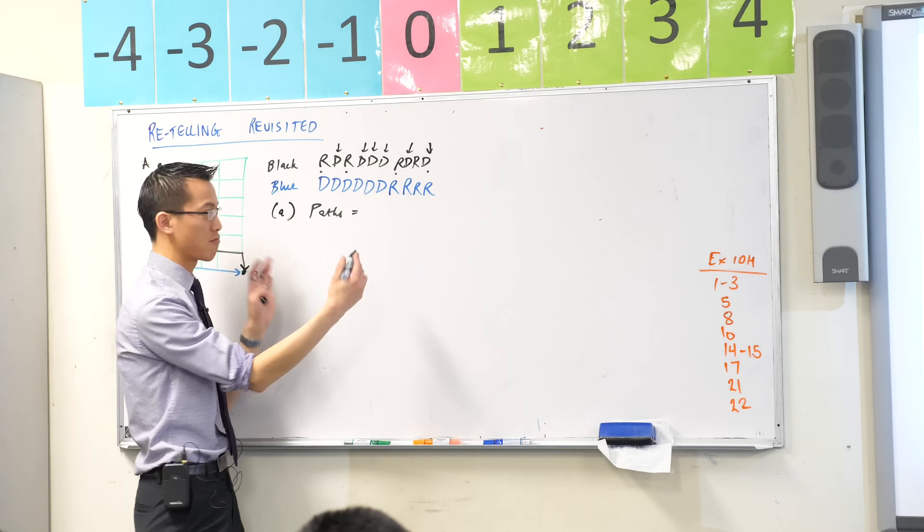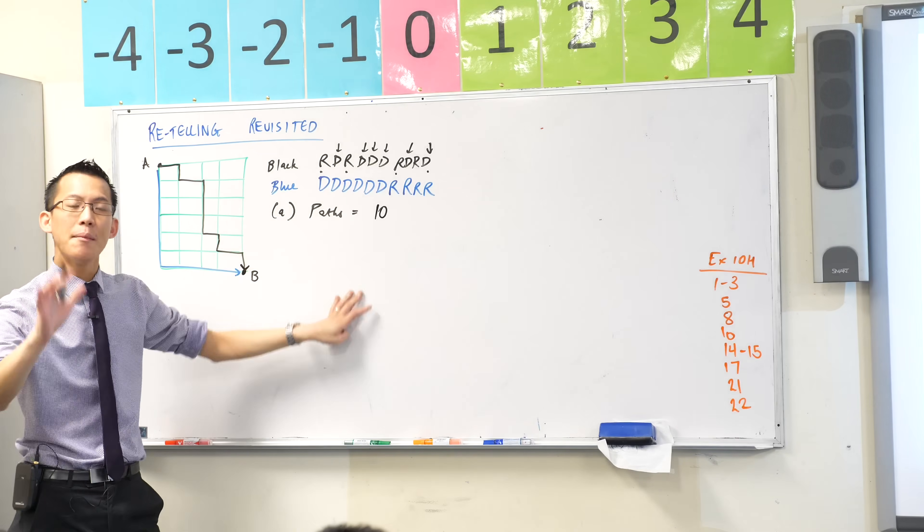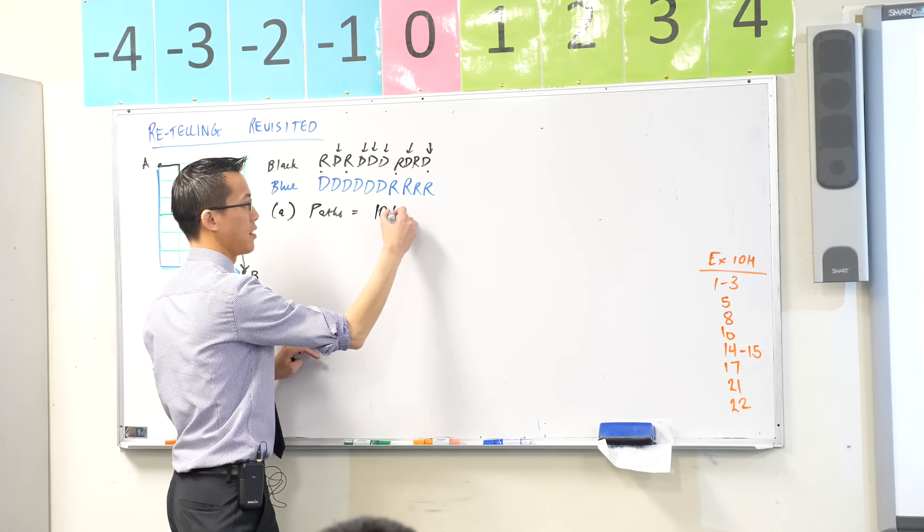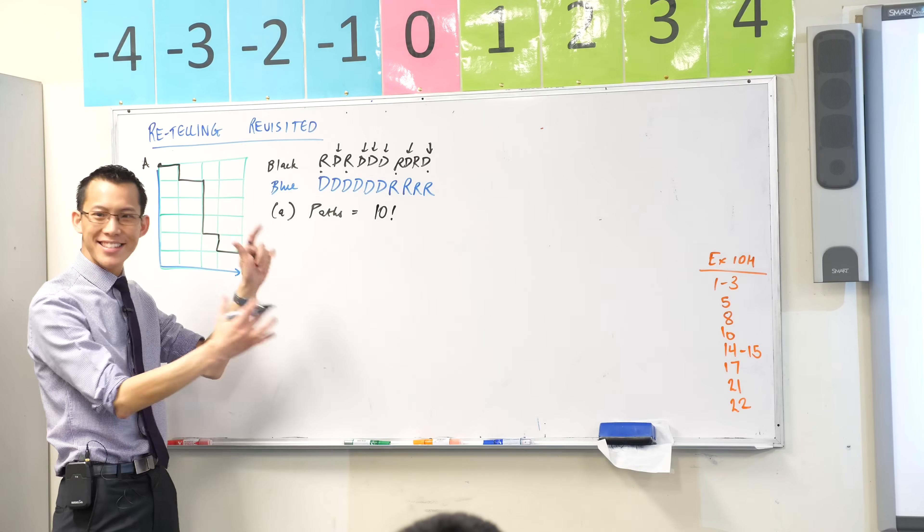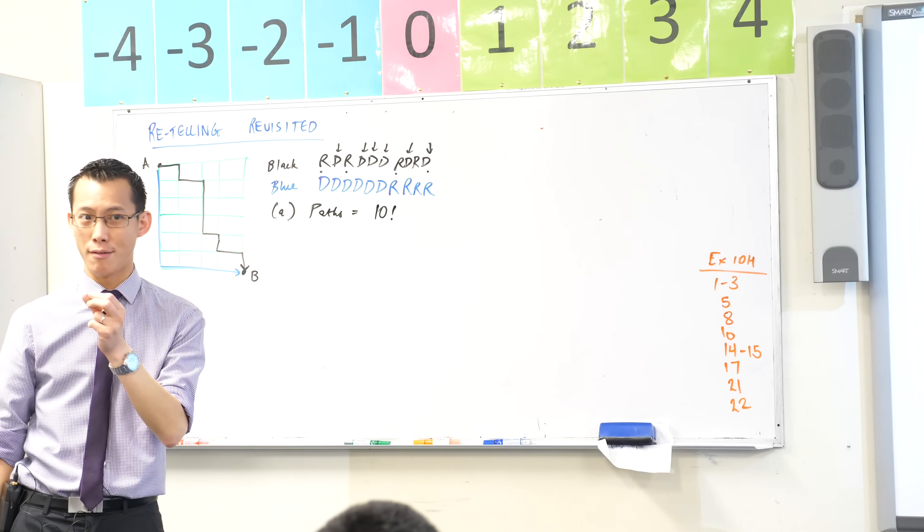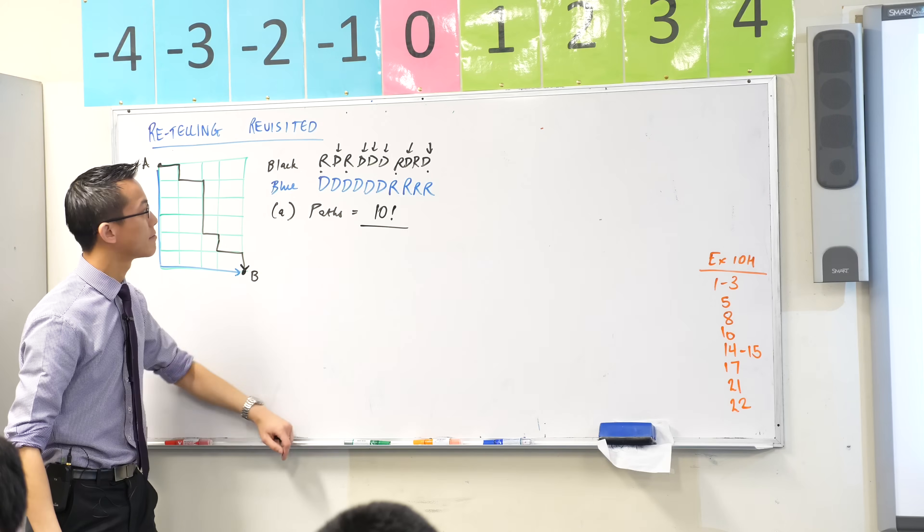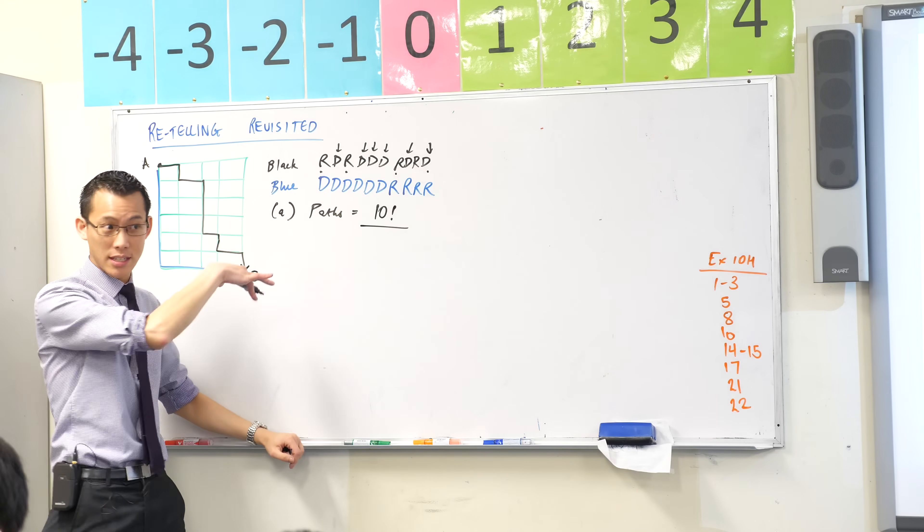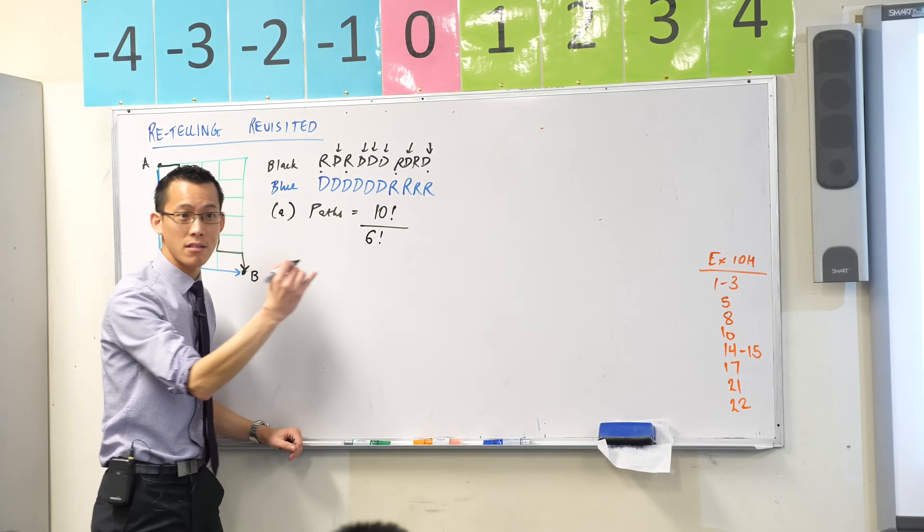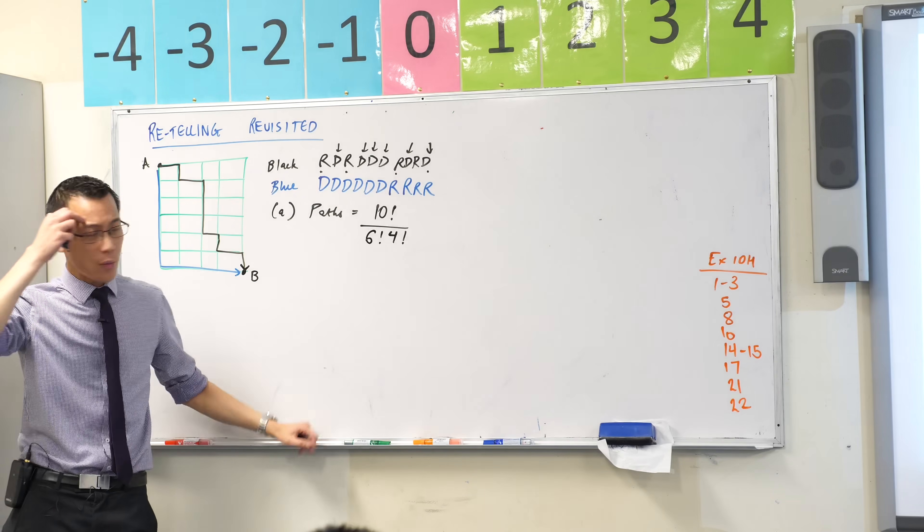Ten objects, and you're rearranging them. How many ways are there to rearrange 10 objects? 10 factorial. But of course we're drastically over-counted if we just say 10 factorial because there are many repeated letters. How many repeated letters are there? There are six and four. Six downs you can do and four rights you can do, so I can rearrange the downs this way and I can rearrange the rights this way.